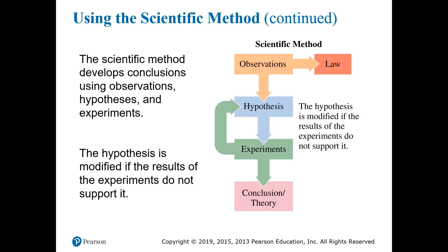This last part is important. You can see from this diagram that the scientific method is not a linear journey from questions to answers. When our experiments disprove our hypotheses, we don't just give up and run away to join the circus as much as we might want to. We take the new information and consider what it means for our previous observations and how we might need to change our hypothesis or improve our experiments.